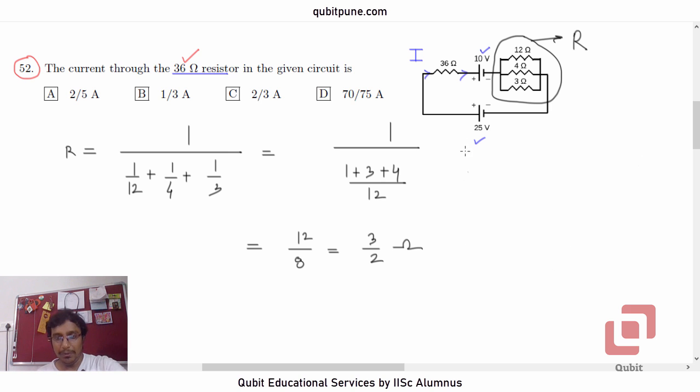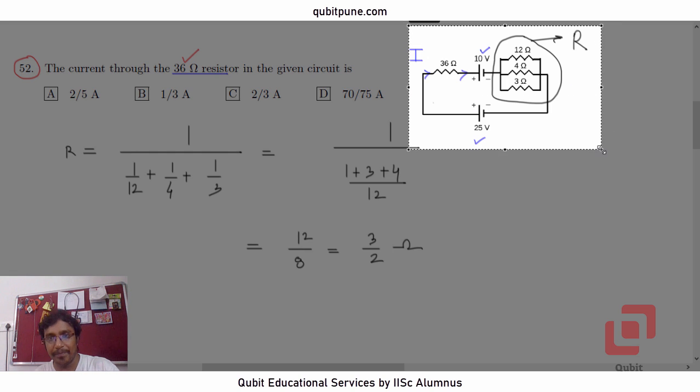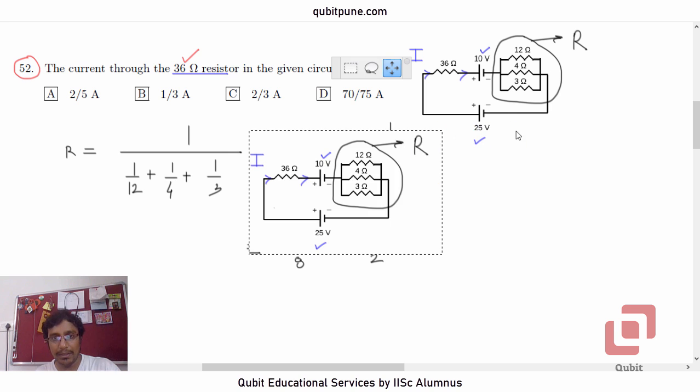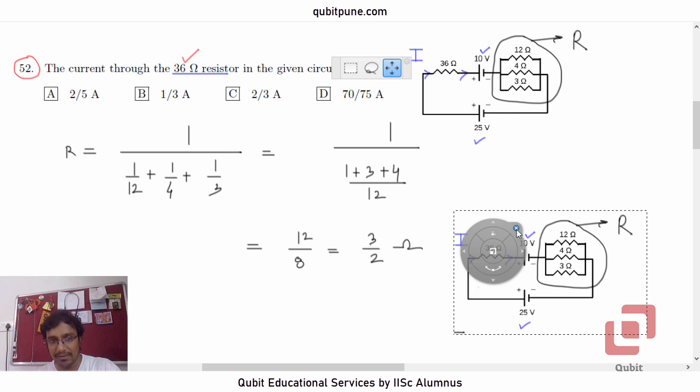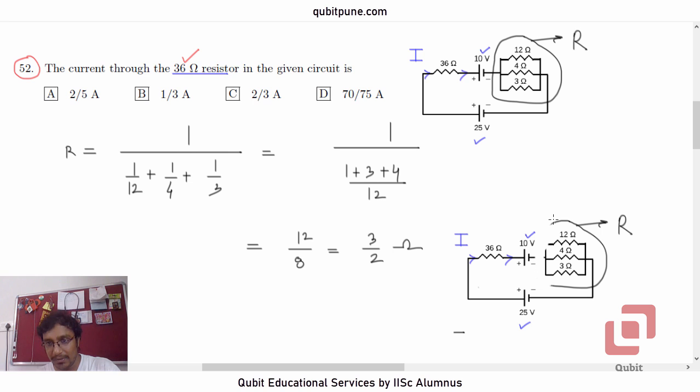So let us redraw the circuit now. Let us redraw the circuit by deleting this part and showing a single resistance there. That's R. Let me show it in red color now. So that is 3 by 2.